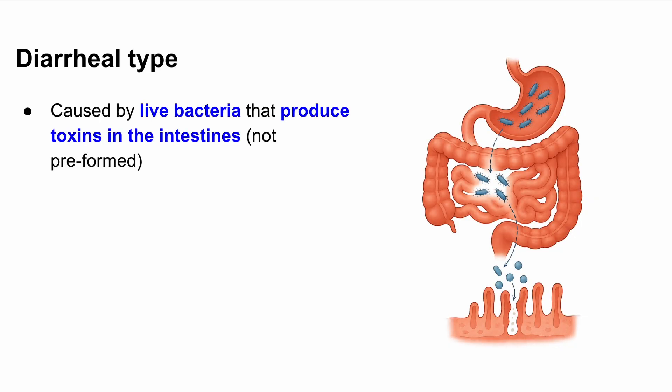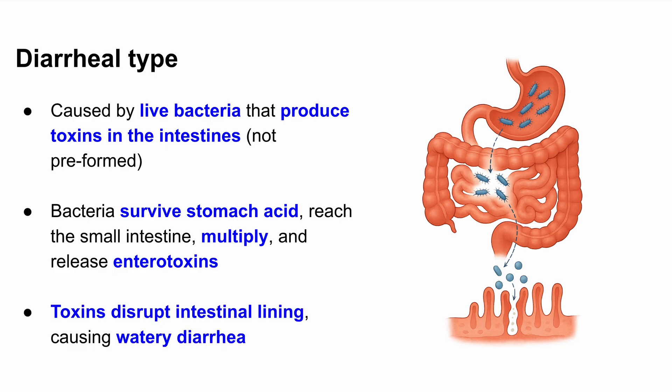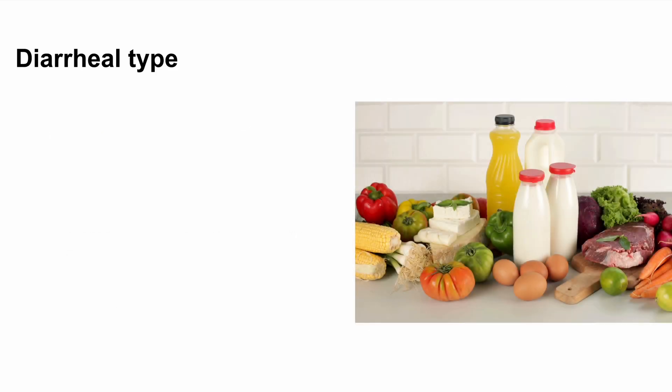Now let's move on to the second type: the diarrheal type of Bacillus cereus food poisoning. This one works differently. Instead of being caused by a preformed toxin, the diarrheal type results from ingesting bacterial cells that go on to produce toxins inside your intestines. You eat food contaminated with live Bacillus cereus cells. These bacteria survive passage through the stomach, reach the small intestine, multiply, and secrete enterotoxins. These toxins disrupt the normal function of the intestinal lining and cause watery diarrhea. Because the bacteria need time to multiply and make toxins, symptoms are delayed — usually showing up 6 to 18 hours after eating.